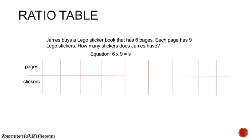Let's take a look at our equation here. James buys a Lego sticker book that has 6 pages. That's the first part of my equation, 6. Each page has 9 Lego stickers. Your keyword here to make this multiplication is 'each.' Each page has 9 Lego stickers, and how many stickers does James have? That equals your variable, what you're missing here, S for stickers. So let's start filling this out. The way the ratio table works is that we start with the information given to us in the story problem and use that to find how many stickers James has.